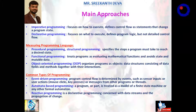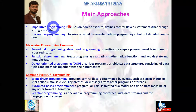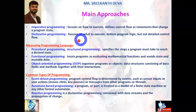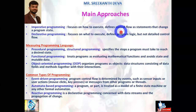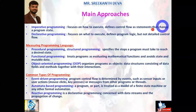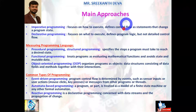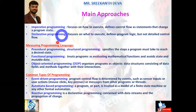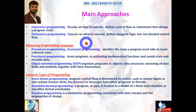Generally, programming languages are categorized mainly into two approaches: imperative programming and declarative programming. Imperative programming focuses on how to execute — it defines control flow as statements that change a program state, using looping statements and conditional control statements. Based on the control flow, the program state is changed in imperative programming.